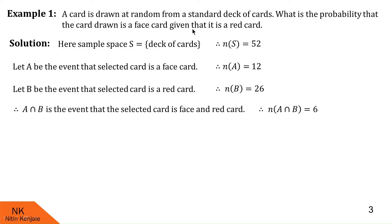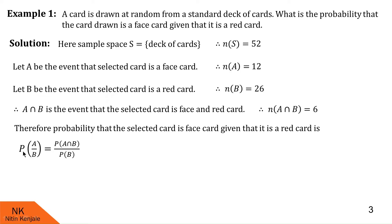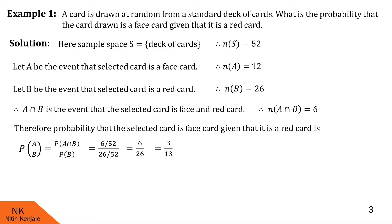Now let us find the probability that the card drawn is a face card given that it is a red card, denoted P of A given B. By the conditional probability formula, P of A given B equals P of A intersection B upon P of B. P of A intersection B is 6 by 52 and P of B is 26 by 52. The 52s cancel, leaving 6 upon 26, which reduces to 3 by 13. I hope you understood this solution.